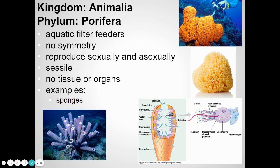Sponges have unique shapes and don't have any symmetry. This feeding strategy is called filter feeding — we're going to talk about a few different types of animals that are filter feeders. They're very simple, but they are animals and have all the characteristics of animals.